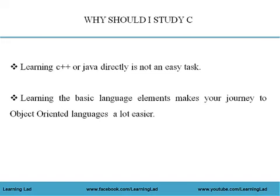Learning C++ or Java directly is not an easy task, because C++ and Java use an object-oriented programming approach. This approach introduces advanced concepts like class, objects, inheritance, polymorphism, templates, and many more. To understand these complex concepts, you should be aware of the basic language elements. If you know the basic language elements, you can learn these object-oriented languages a lot easier.